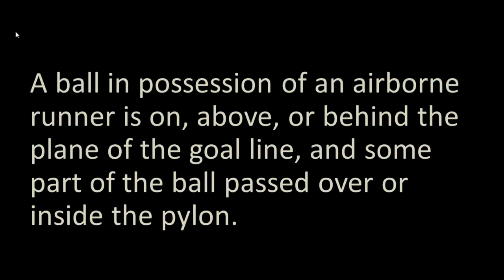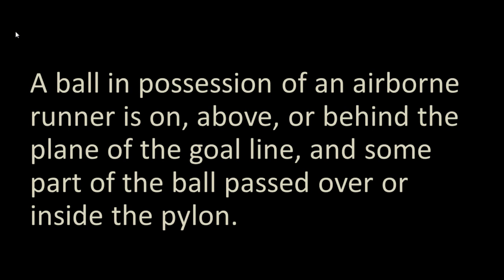The second way is that the ball is in possession of an airborne runner and is on, above, or behind the plane of the goal line, and some part of the ball is over or inside the pylon. When the offense gets close to the goal line, things can get very tight and a player may try to jump into the end zone. The very instant any part of the ball is over any part of the line, it is a touchdown. It looks like this running back has indeed scored a touchdown.